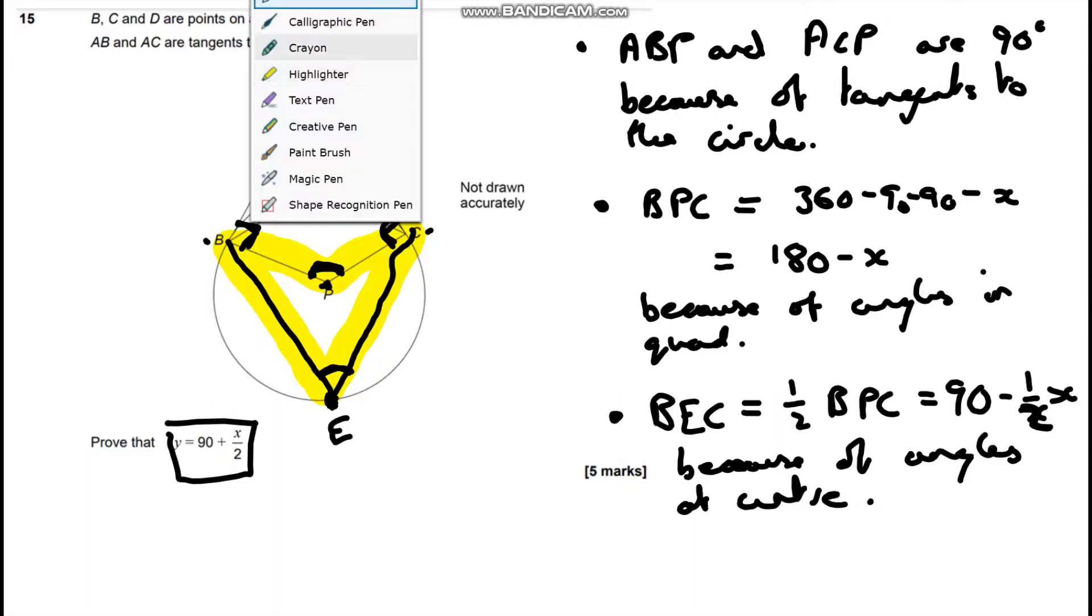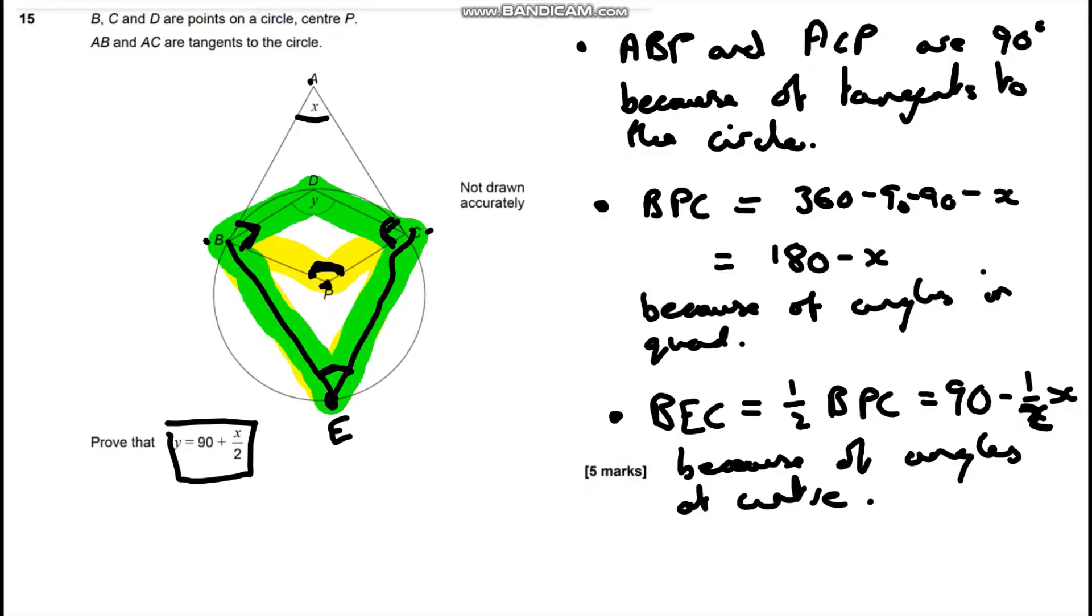Our final step is we've actually got a cyclic quadrilateral here, where our angle Y and this angle in here BEC are both touching the circumference of the circle. We know through the cyclic quadrilateral theorem that these two angles are going to have to add together to give 180. So Y is going to equal 180 take away 90 take away half X, which is going to give us 90 plus a half X, because of cyclic quadrilateral theorem.